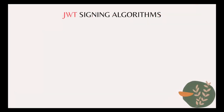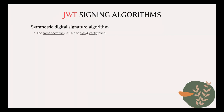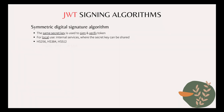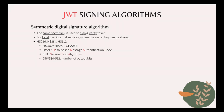The JWT standard provides many different types of digital signature algorithms, but they can be classified into 2 main categories. The first one is the symmetric key algorithm, where the same secret key is used to both sign and verify the tokens. Since there's only one key, it should be kept secret. So this algorithm is suitable for local use only, or in other words, for internal services where the secret key can be shared. Some specific algorithms which belong to this symmetric key category are HS256, HS384, and HS512. Here, HS256 is the combination of HMAC and SHA256. HMAC stands for hash-based message authentication code, and SHA is the secure hashing algorithm. 256, 384, or 512 is the number of output bits. Symmetric key algorithm is very efficient and suitable for most applications.